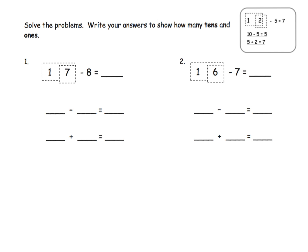We are going to start by taking that 17, shown to us in that hide-zero format. What we want students to see is that 17 is made up of a 10 and a 7, and now we're going to record our two separate steps. So we've got 10 minus 8 is 2, and now we've got 2 plus the original 7 gives us 9. So our answer is 9.